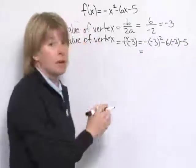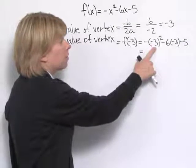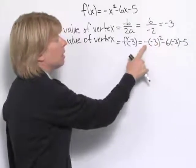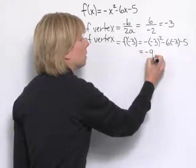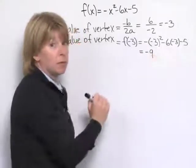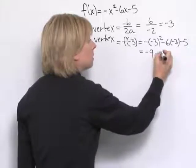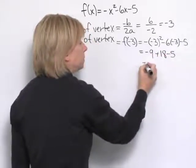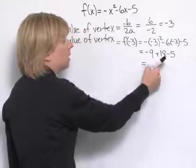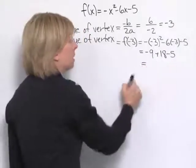And simplifying this, we'll get (-3)² is 9, and we've got this negative in front of it, so -9. -6 times -3 is positive 18, and minus 5. -9 + 18 is 9, minus 5 is 4.